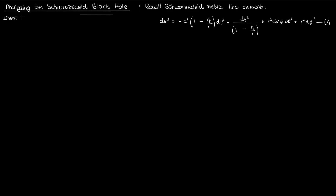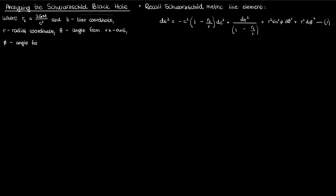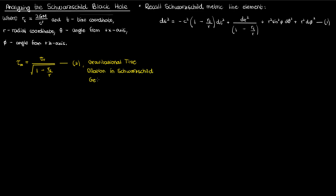Note that r sub s is the Schwarzschild radius, and the coordinates corresponding to this line element are defined as follows. Recall also from my last video that the proper time interval perceived by an observer really far away from our mass m, tau infinity, is related to the proper time interval experienced by someone at a radial coordinate r by the following equation — this is my equation for gravitational time dilation in Schwarzschild geometry, equation 2.